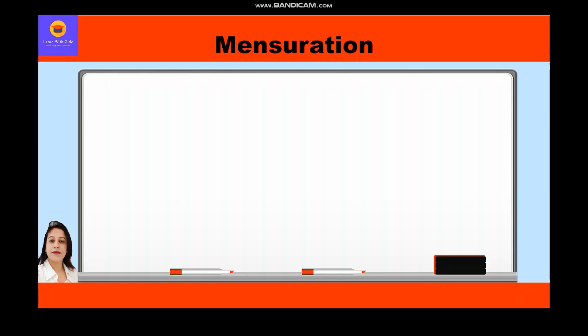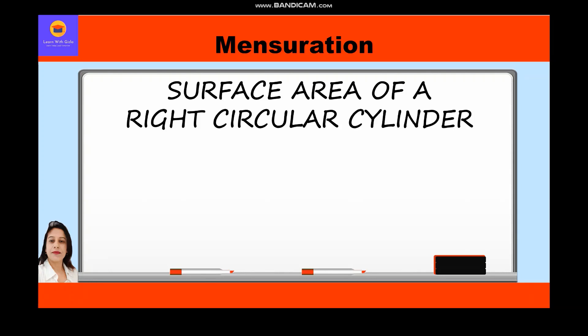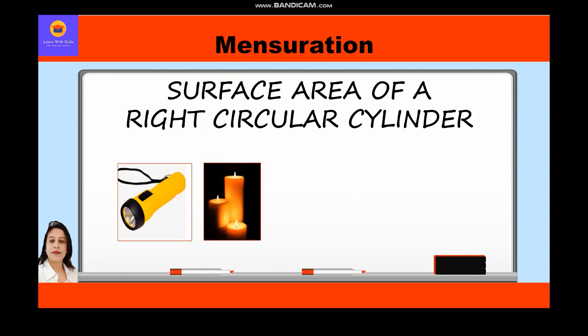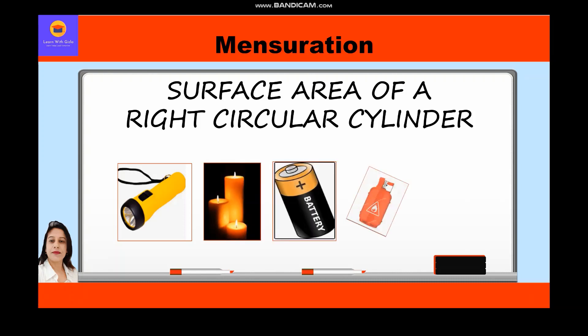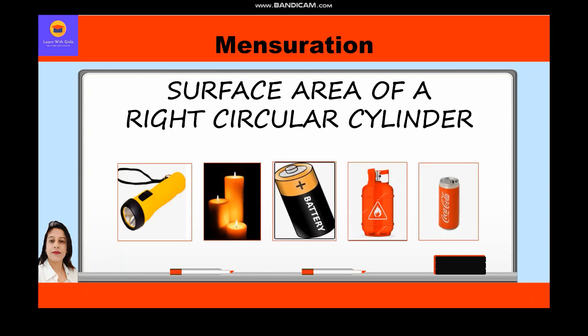Hello everyone. In this video on mensuration, we are going to study about the surface area of a right circular cylinder. In everyday life we come across various objects which are cylindrical in shape — for example, a torch, candle, battery, gas cylinder, Coca-Cola can, and so on. Many objects in everyday life are cylindrical in shape.